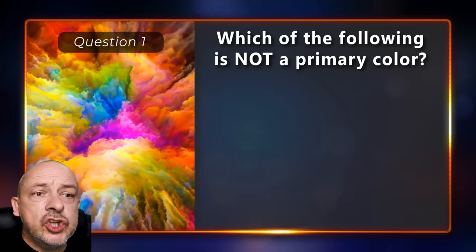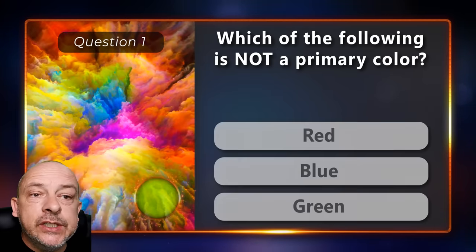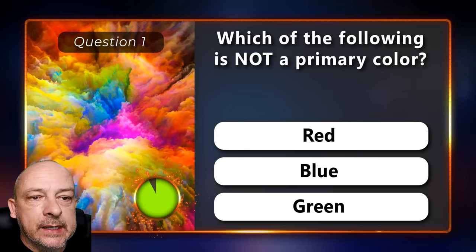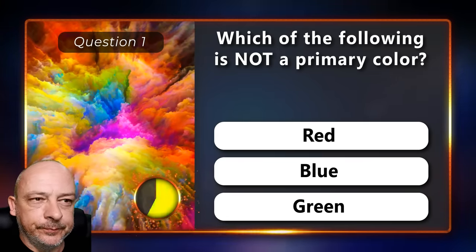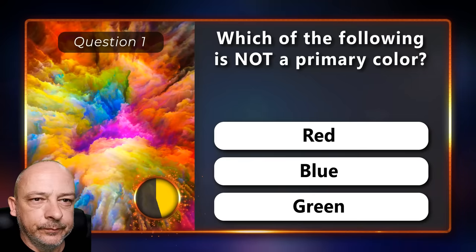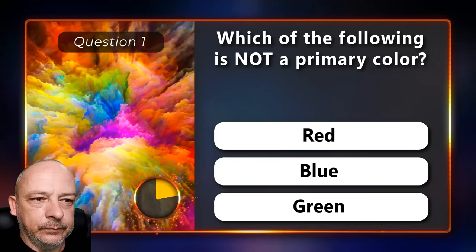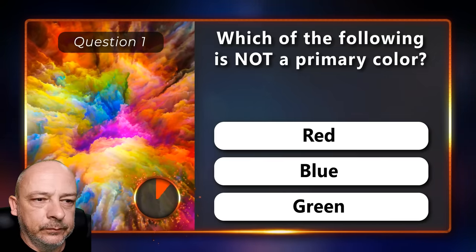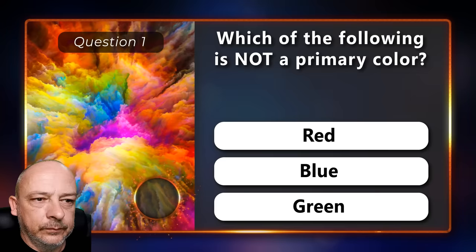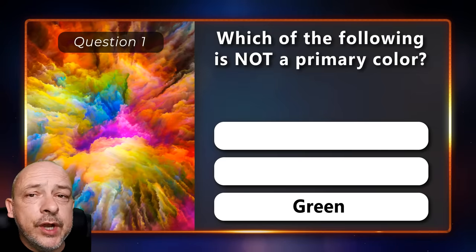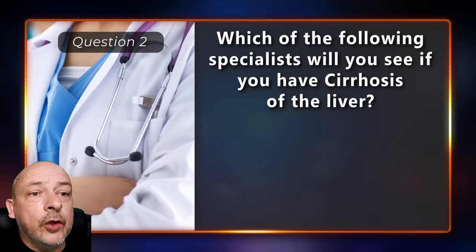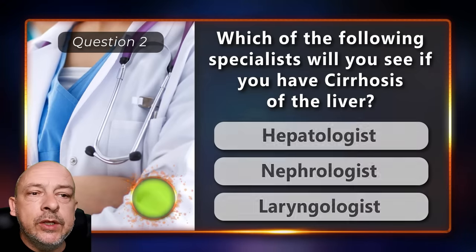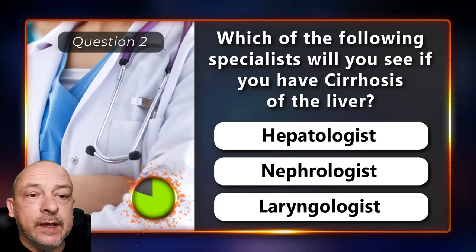Question one: which of the following is not a primary color — red, blue, or green? The correct answer is green.